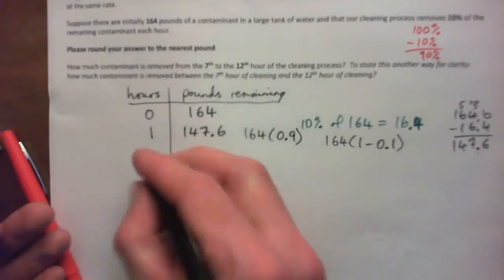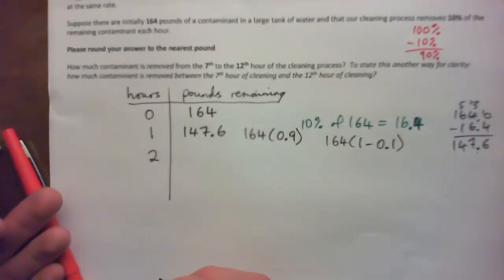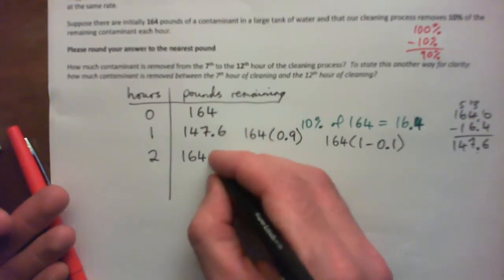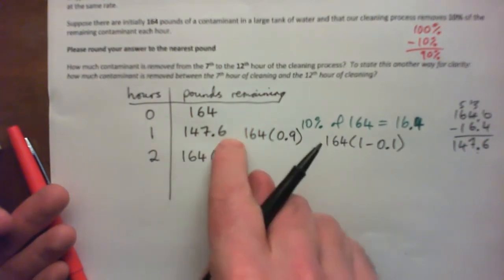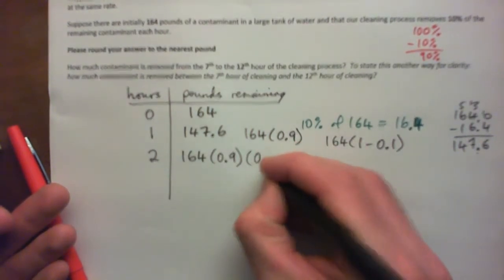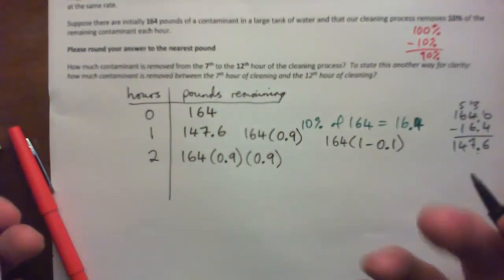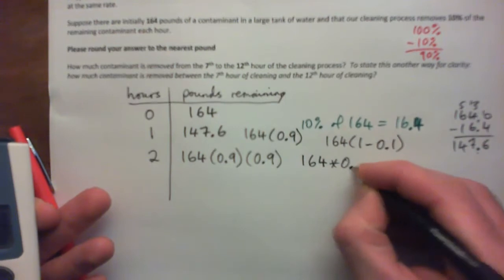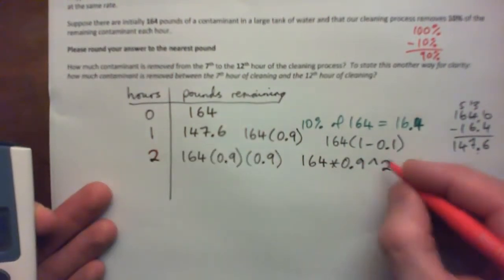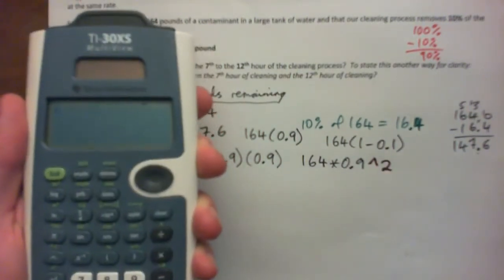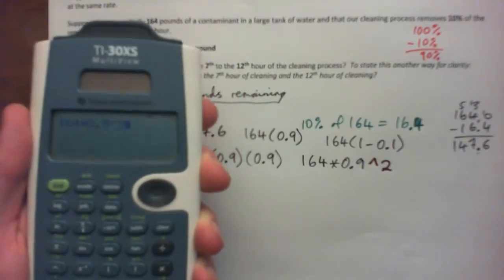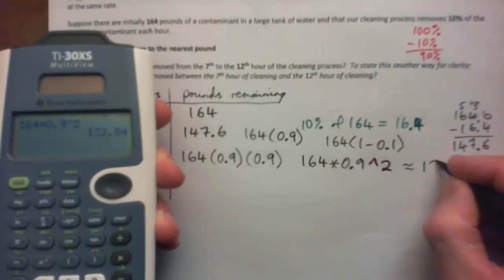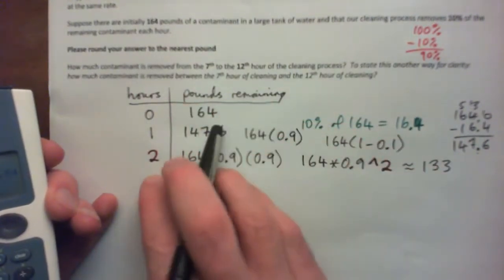So after two hours, what would be remaining? You'd start with 164 pounds and multiply by 0.9 to get your 147.6. And then just multiply by 0.9 again to get what's remaining after two hours. And in calculator form, we just write 164 times 0.9 to the power of 2. And that is what is remaining after two hours. 164 times 0.9 to the power of 2. 132.84. Or I'm just going to round that to like 133 pounds about.